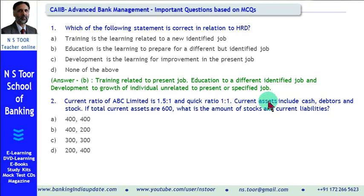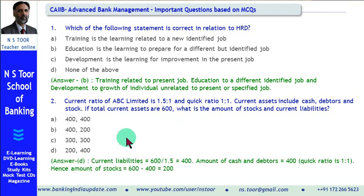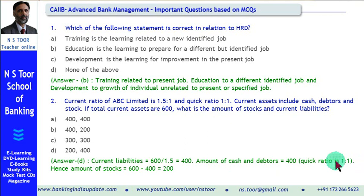Out of total current assets, if we exclude cash and debtors — which are the quick assets — we are left with stock. So stock = 600 minus 400 = 200. Therefore, the amount of stock is 200 and the amount of current liabilities is 400. Hence option D is the correct answer.